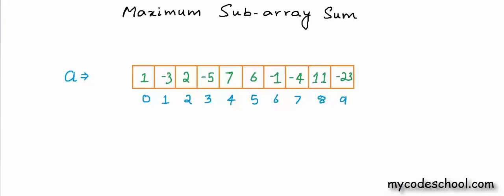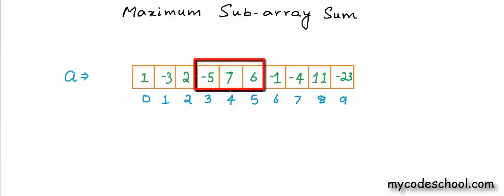A over here is an array of size 10. Its indices are marked from 0 to 9. In this problem, the array can have both positive and negative values. A subarray is defined as a continuous part or section of the given array. As you can see, minus 5, 7, 6 form a subarray. The sum of this given subarray over here would be 8.